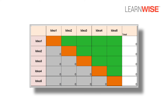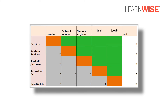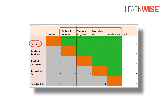First, list all your ideas as row labels. Then list the same ideas as column headings as well. Let's start with the smoothie idea in the horizontal row and compare it one by one with the ideas in the vertical columns.